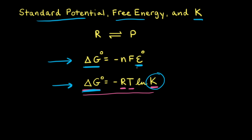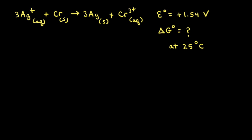Let's look at an example of a redox reaction where we know the value for the standard potential E°. First we're going to calculate ΔG°, and then from ΔG° we're going to calculate the equilibrium constant K. Here's our redox reaction and we're going to calculate ΔG° at 25°C from E°.